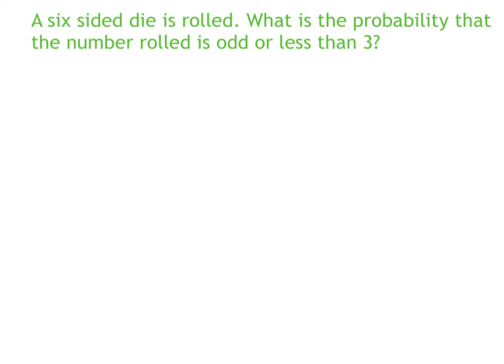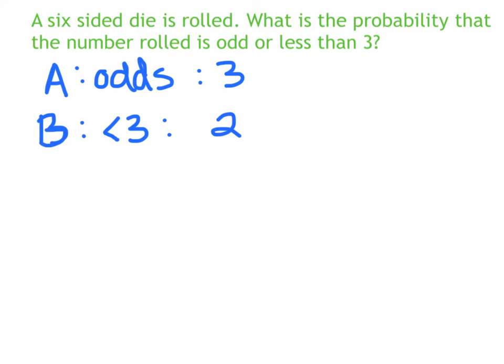Alright, here's another one. A six-sided die is rolled. What is the probability that the number rolled is odd or less than three? So if we let event A be the odd numbers, there are three of those. And if we let B be the event that is less than three, well, there are two of those.